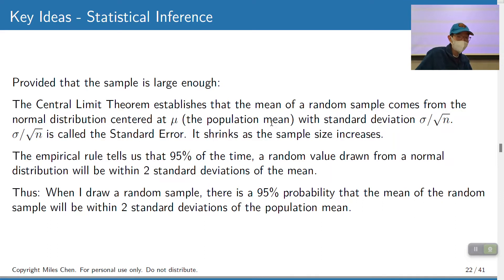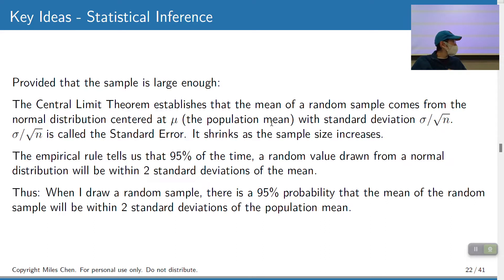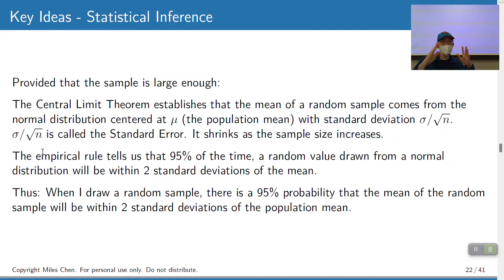So as long as the sample is large enough, the central limit theorem says the mean of a random sample comes from a normal distribution centered at mu (the population mean) with a standard deviation of sigma divided by the square root of n. We call this the standard error — the standard deviation of the sampling distribution. This shrinks as n increases, so the variance from one sample mean to another gets smaller as your samples get bigger.